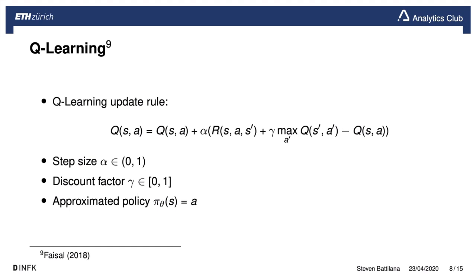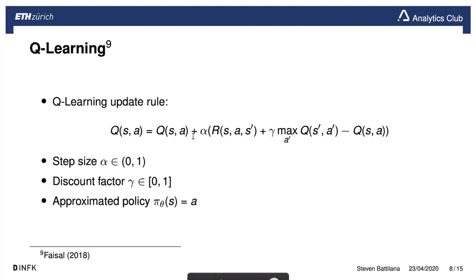Walking through the Q-learning update rule: on the left is the new state-action value, and you update it using the full expression. Alpha is the step size. R is the immediate reward after starting at state s and taking action a, landing in state s-prime — this tells you the reward obtained from that transition.